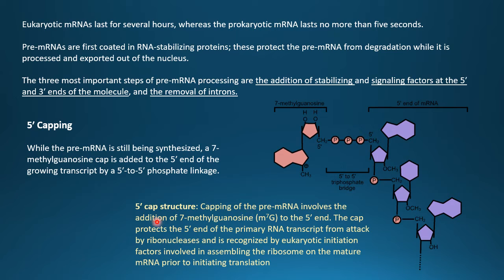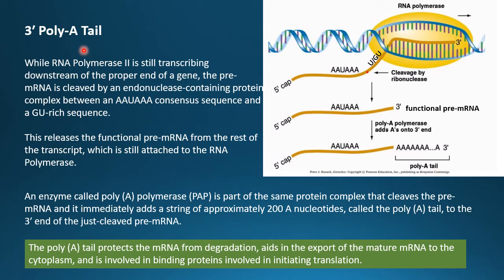Capping of the pre-mRNA involves the addition of 7-methylguanosine (m7G) to the 5' end. The cap protects the 5' end of the primary RNA transcript from attack by ribonuclease enzymes that degrade RNA. The cap is also recognized by eukaryotic initiation factors involved in assembling the ribosome on the mature mRNA prior to initiation of translation, so the 5' cap also has a function in translation initiation.